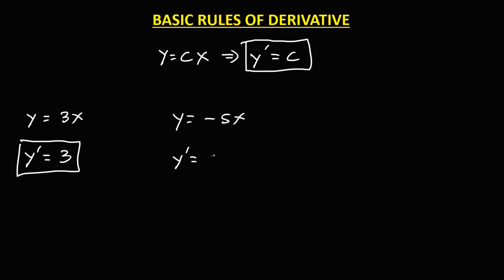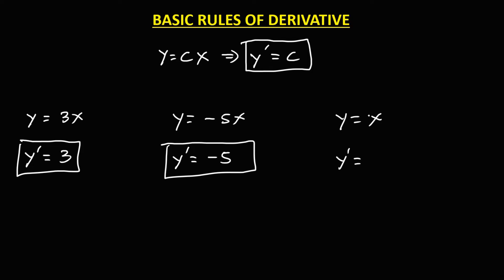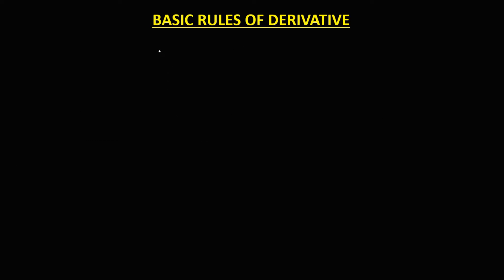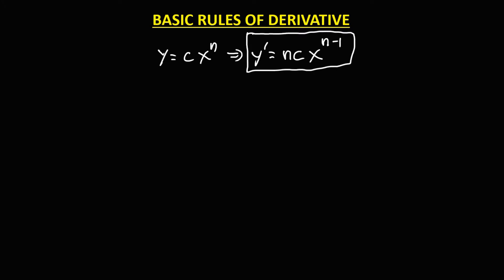to find the derivative — since we have a coefficient — y prime is equal to 1. For y equals a constant times x to the power n, y prime equals n times the constant, times x to the power n minus 1. This is how to find the derivative using the power rule.